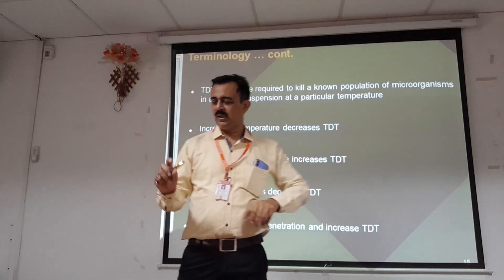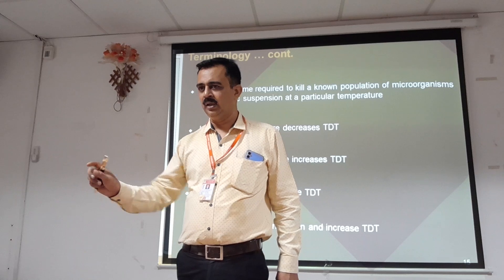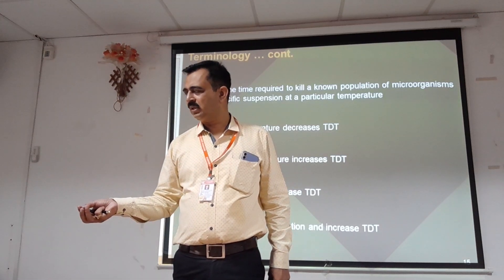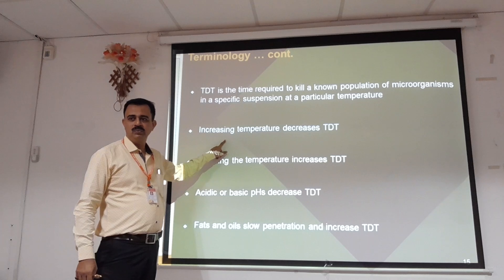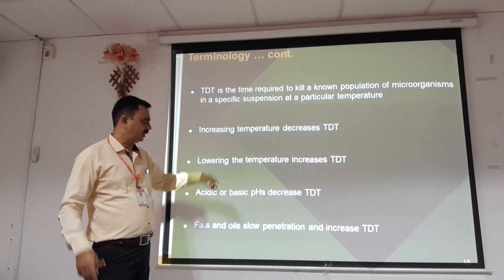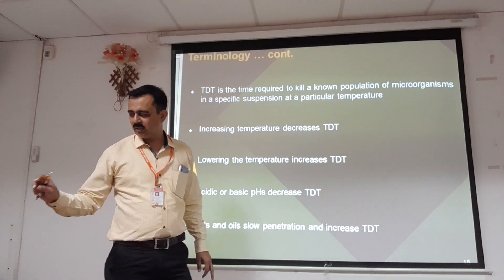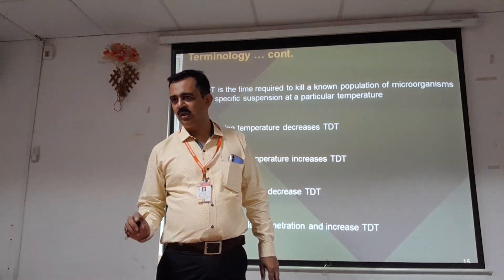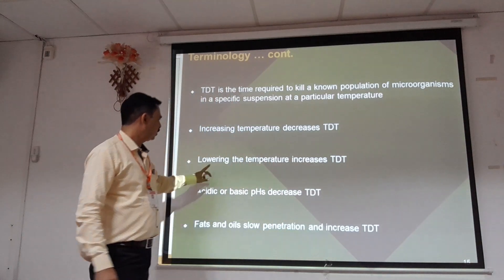For example, if we use a flame directly on a test tube, in just 3-4 seconds the microorganisms are dead because boiling temperature is 100 degrees. Lowering the temperature increases TDD — at 40 degrees, it will take much longer to kill the organisms than at higher temperatures. So lower temperature means more time is required, which increases TDD.